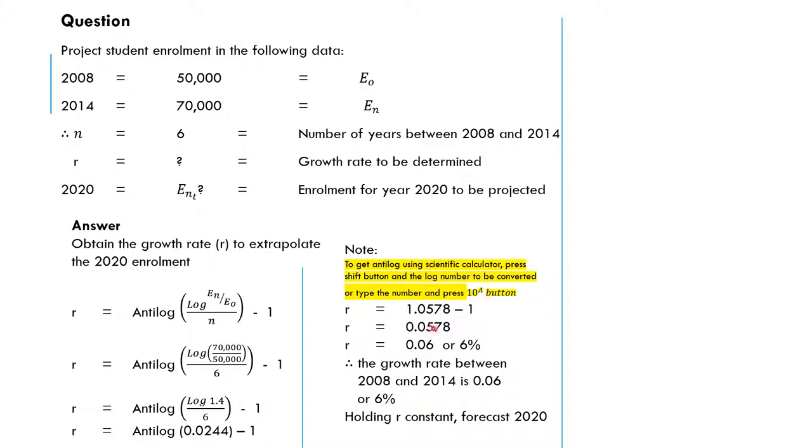You have looked at the anti-log of 0.0244, which gives you 1.0578 minus 1. It will give you 0.0578, which due to approximation gives you 0.06. That means this 7 you approximate, make it 1, add it to this, give you 6. That will give you 6%. So the growth rate between 2008 and 2014 is 0.06 or 6%.